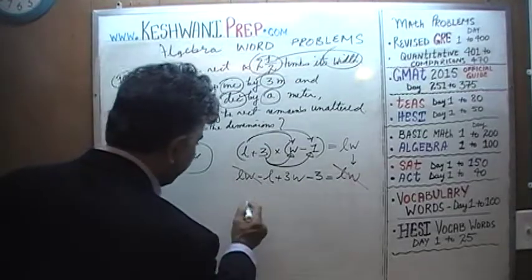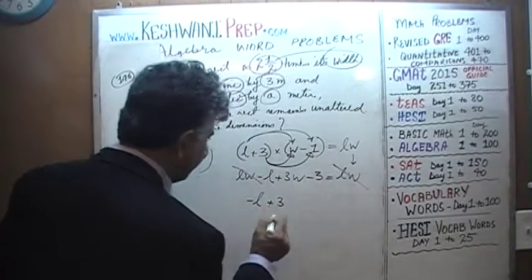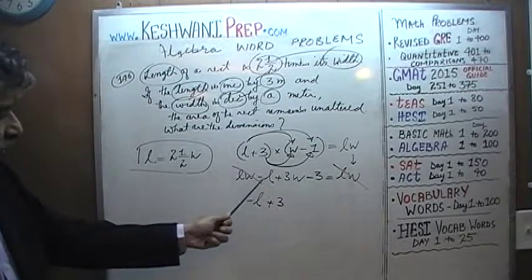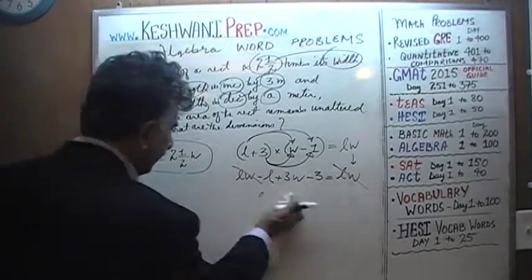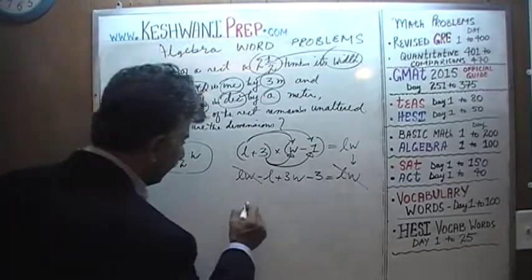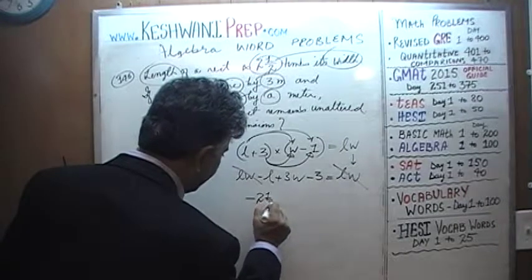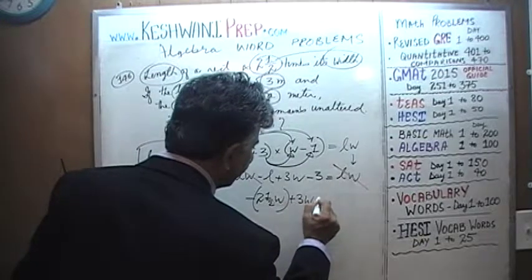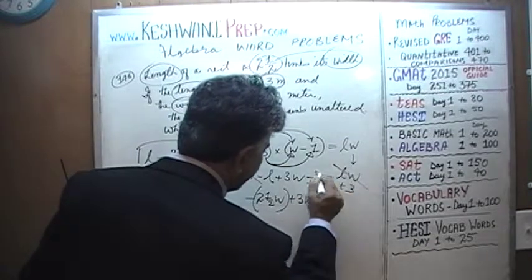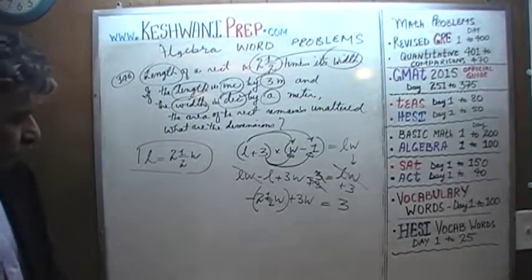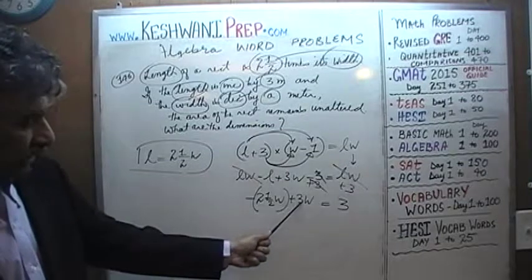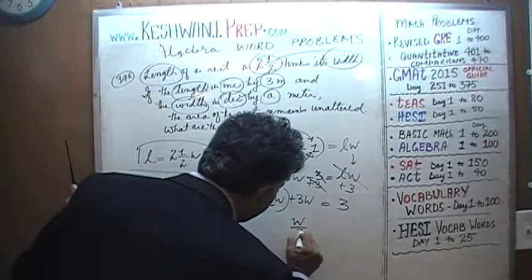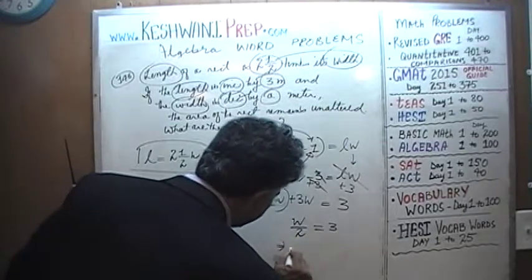We have L expressed as 2.5 times W, so substituting: negative 2.5W plus 3W equals 3. Negative 2.5 and positive 3 gives positive 0.5, so one half of W equals 3, which implies W must be 6.